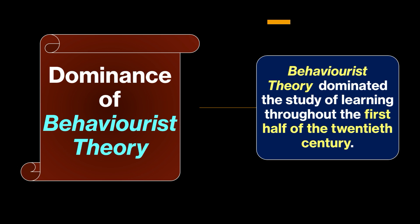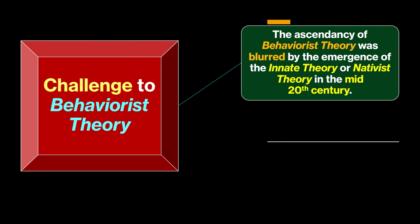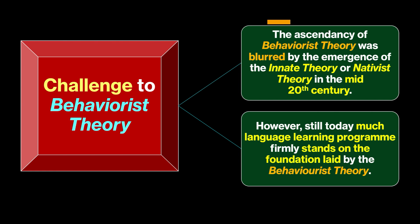Behaviorist theory dominated the study of learning throughout the first half of the 20th century — it was most popular during that period. The ascendancy of behaviorist theory was then blurred by the emergence of the innate theory, or nativist theory, in the mid-20th century.